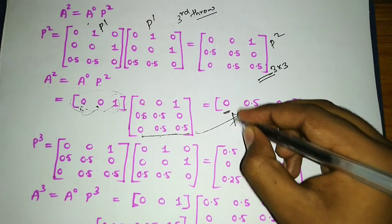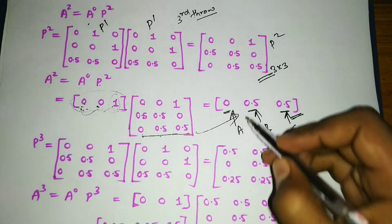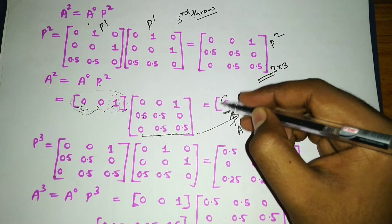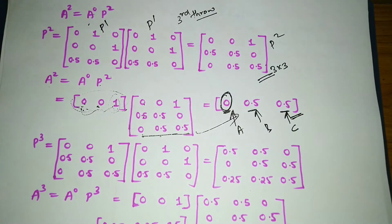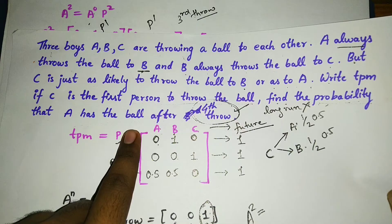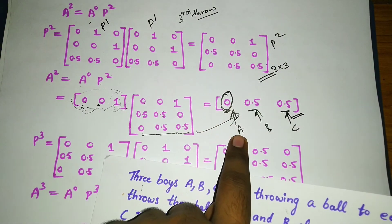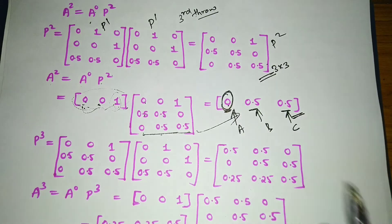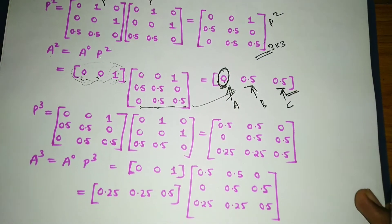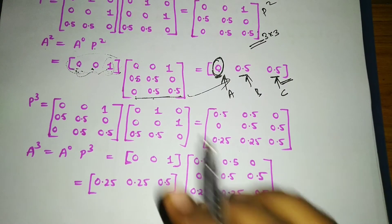We have obtained the probability vector a^2. This is for the third throw — A, B, and C respectively. As you can observe, in the third throw the probability of A having the ball is zero. A does not have the ball after the third throw. Let us now check the fourth throw.